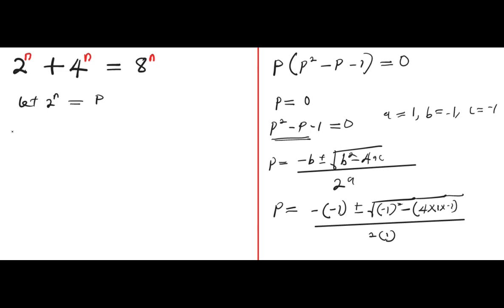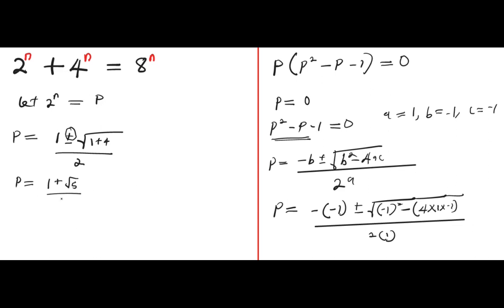So we have p equals negative negative 1, which gives us 1, plus or minus the square root of negative 1 squared minus 4 times 1 times negative 1. That gives us 1 plus 4 inside the root, so we have the square root of 5, divided by 2. Therefore p equals 1 plus root 5 divided by 2, or p equals 1 minus root 5 divided by 2.